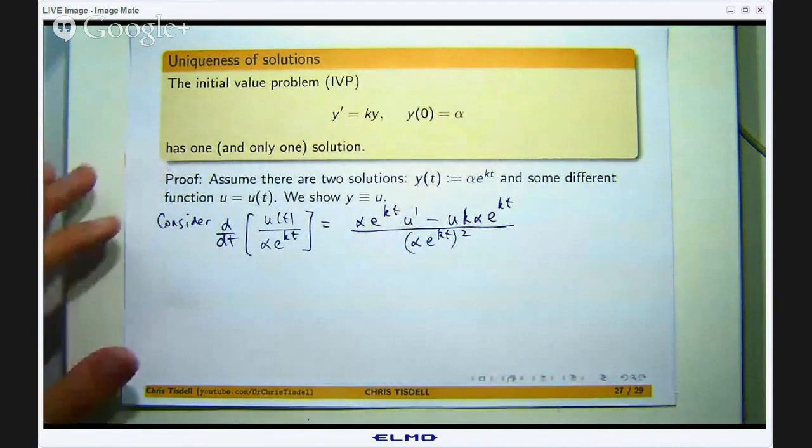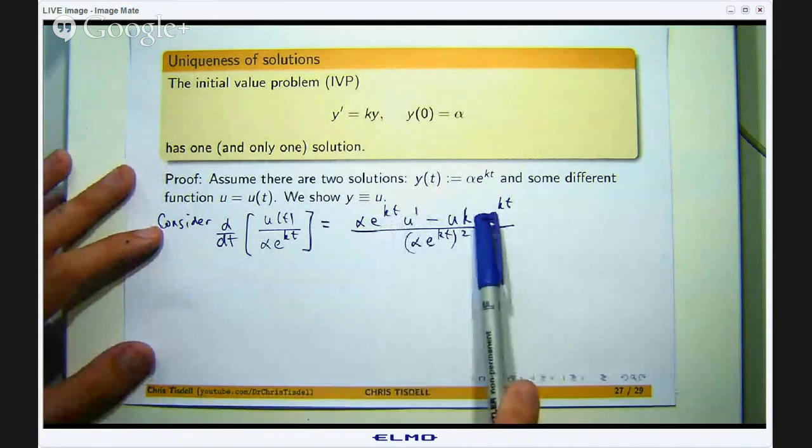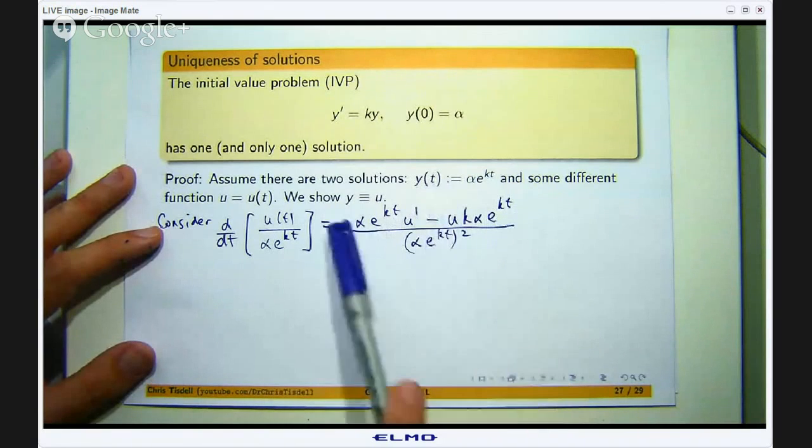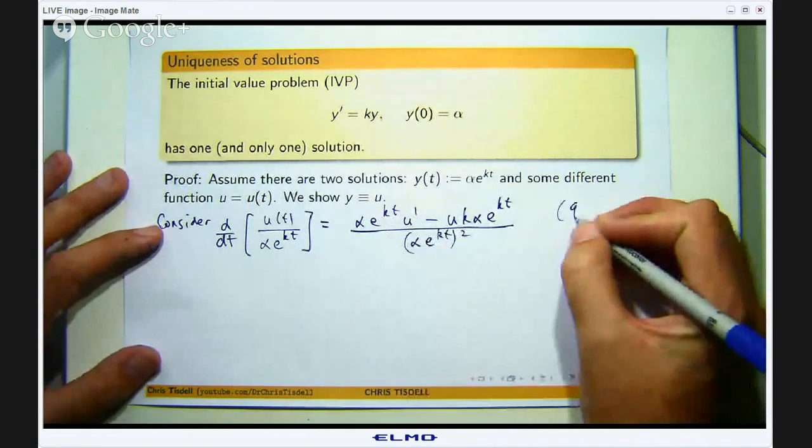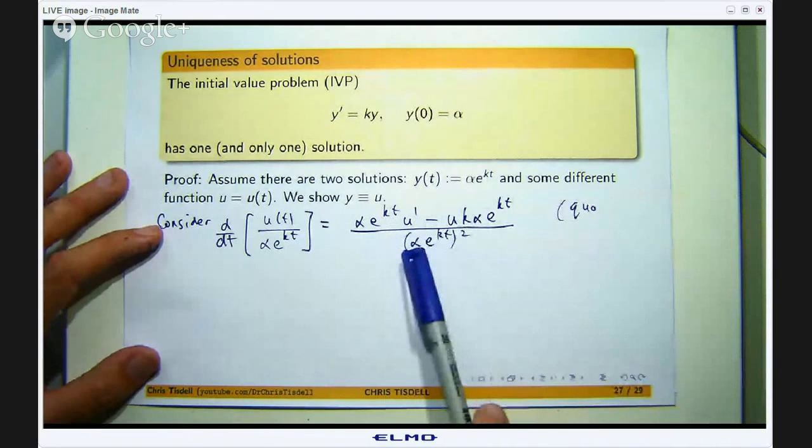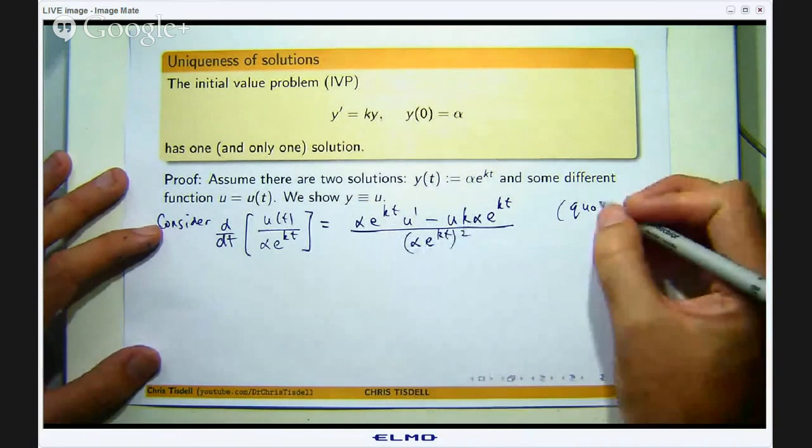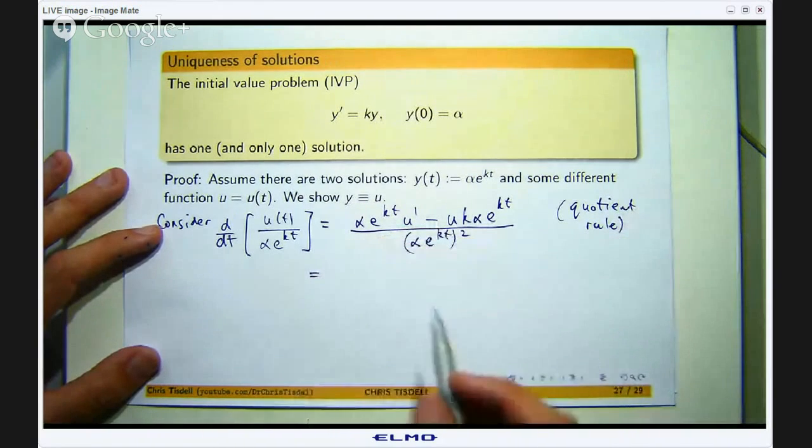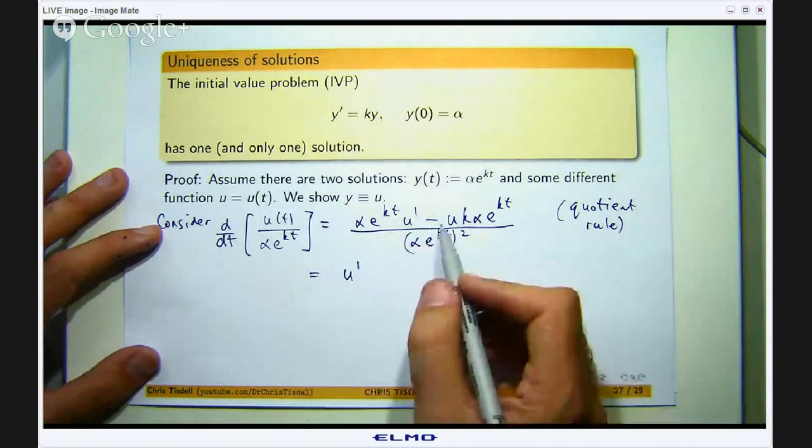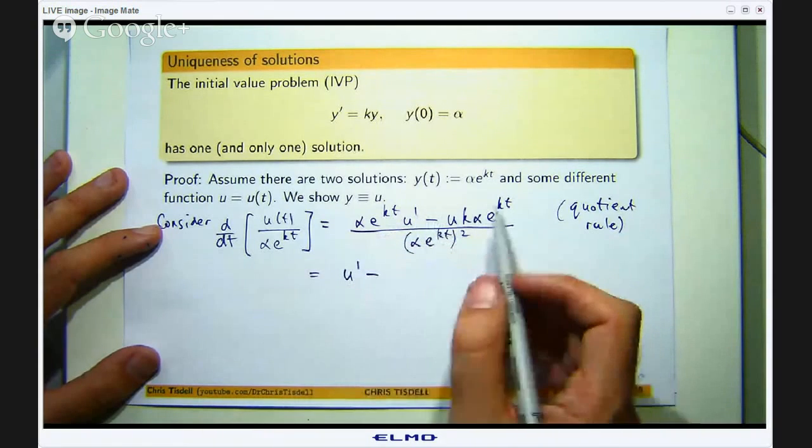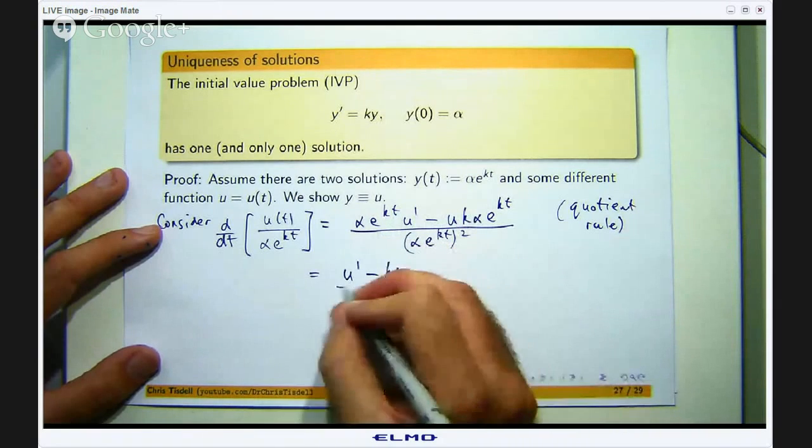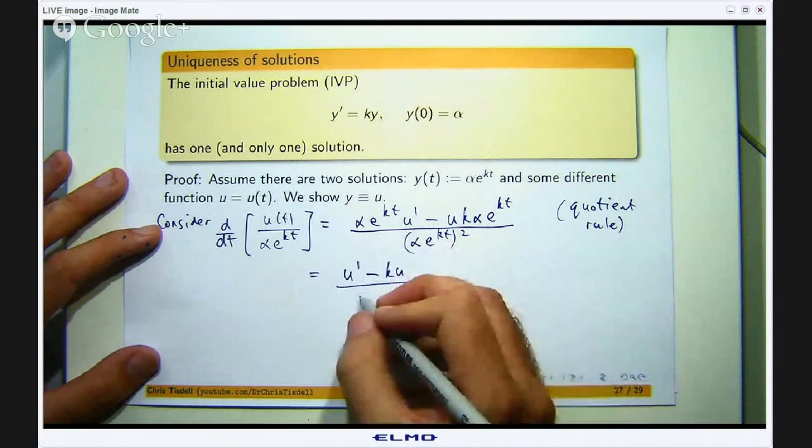Okay so if you see now there is a common factor of α and e^(kt) in the numerator. So I can take that out and I can cross off one of these factors of αe^(kt) in the denominator. So that goes, that goes, I am left with ku and one of these on the denominator will go.